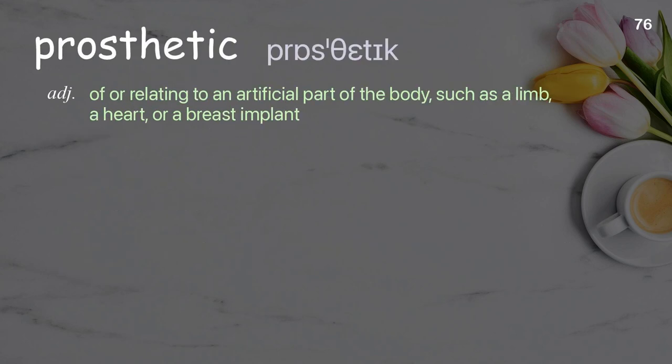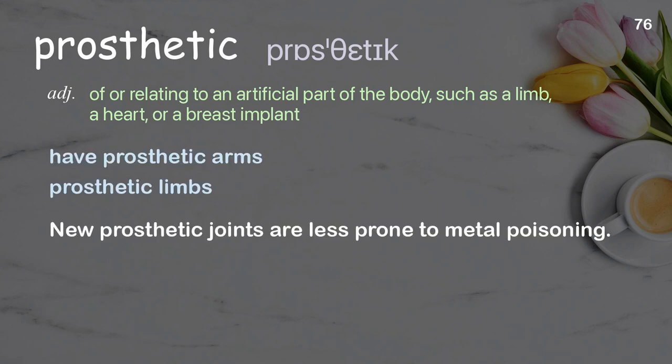Prosthetic: Of or relating to an artificial part of the body, such as a limb, a heart, or a breast implant. Examples: have prosthetic arms, prosthetic limbs. New prosthetic joints are less prone to metal poisoning.